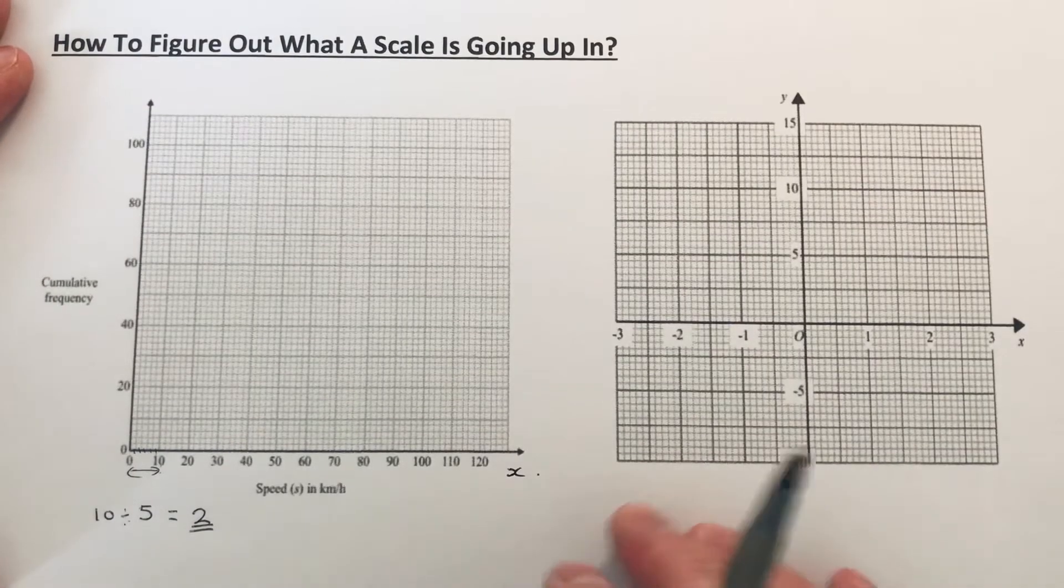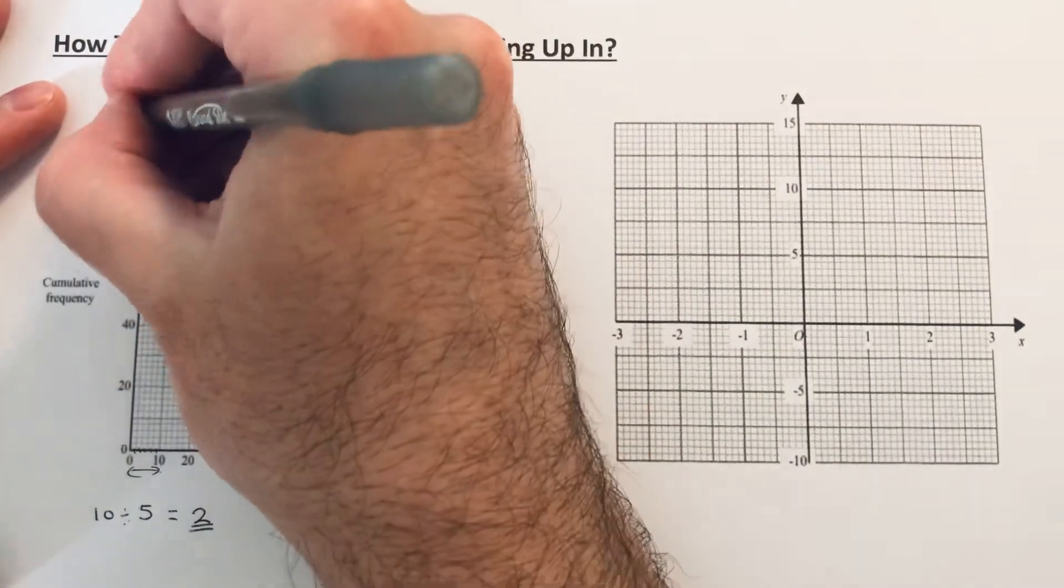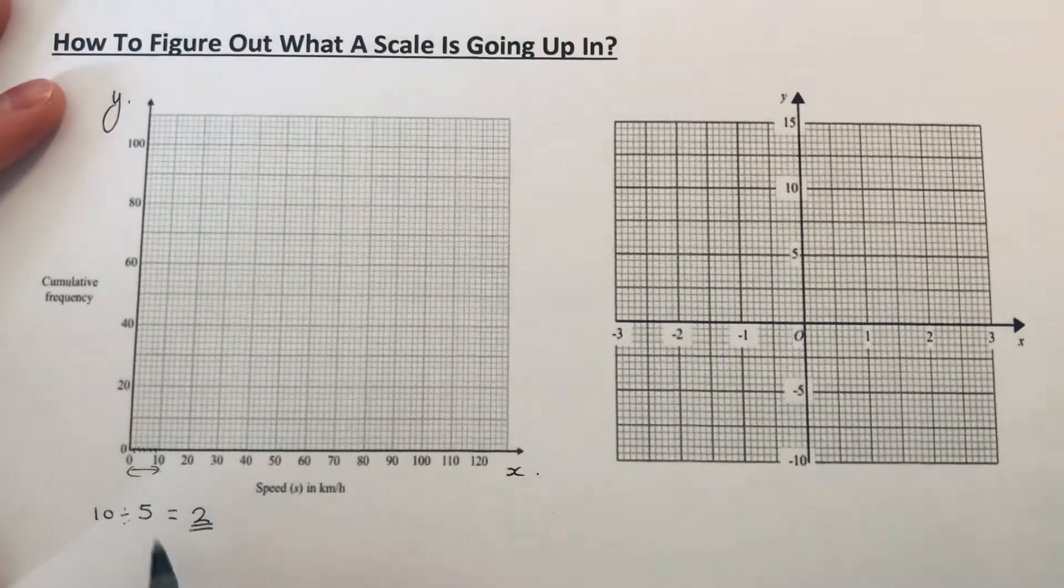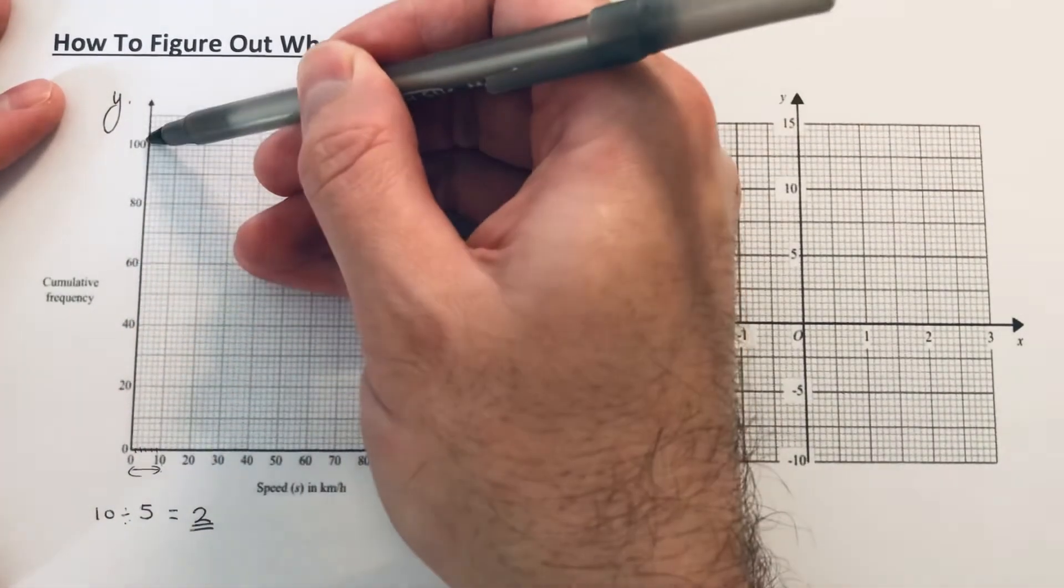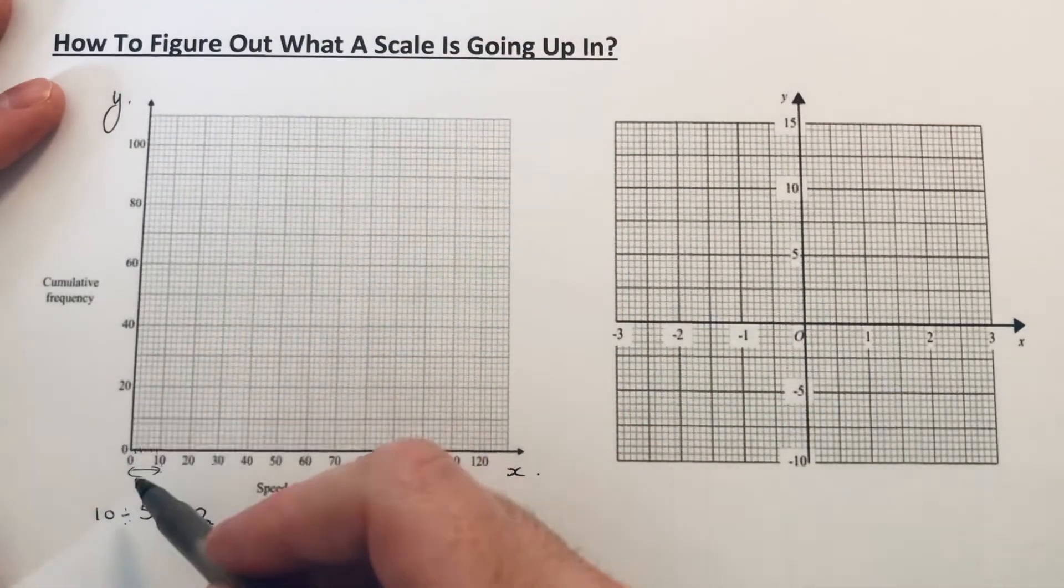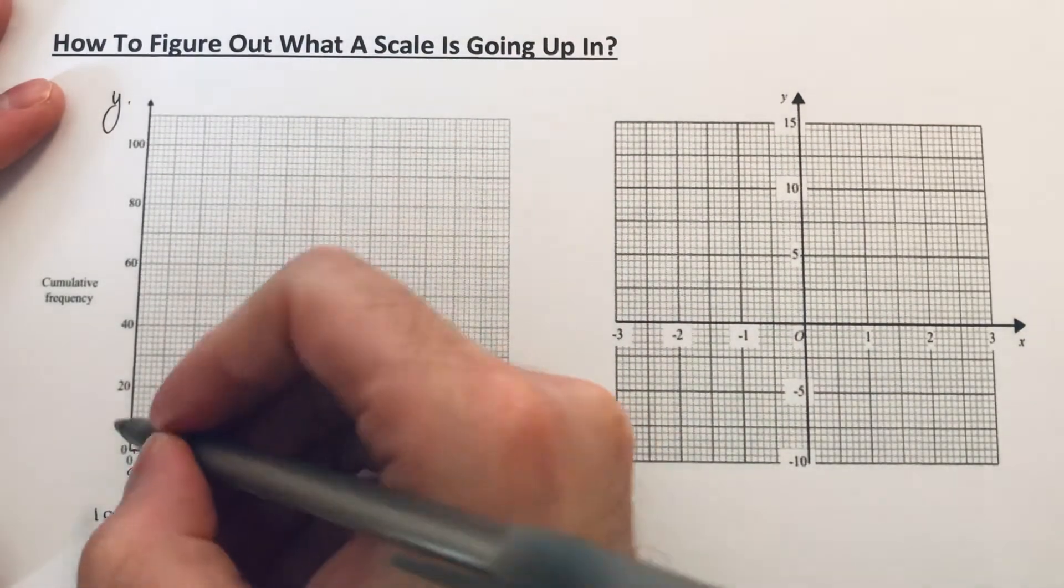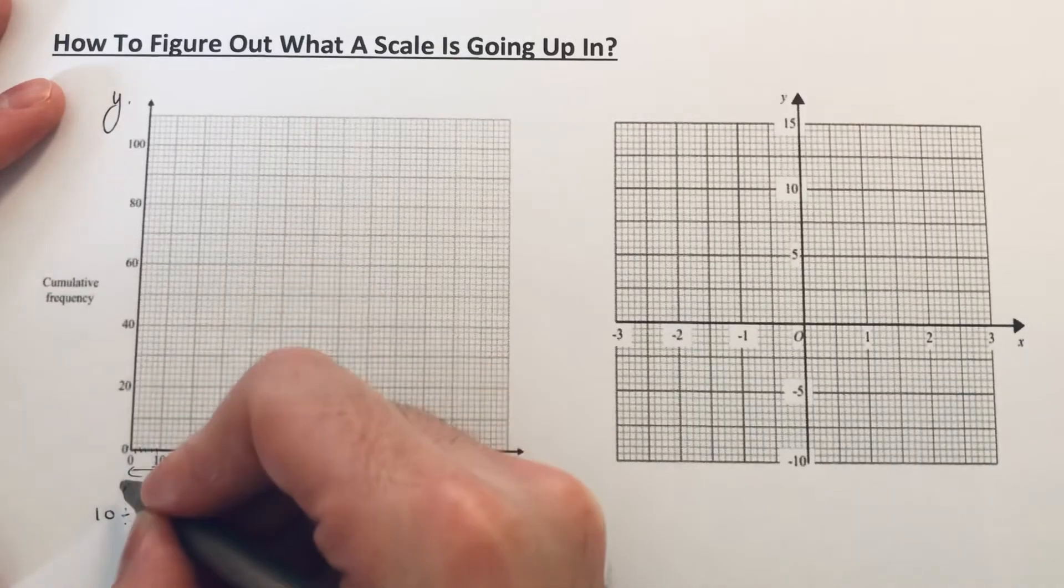Let's do a similar thing for the y-axis. You can see the y-axis is going up in twenties. Let's figure out what each little square is. In between zero and twenty, we have one, two, three, four, five, six, seven, eight, nine, ten squares.